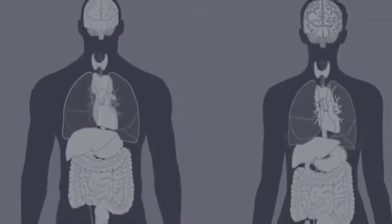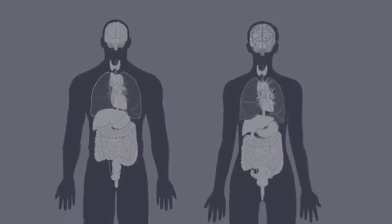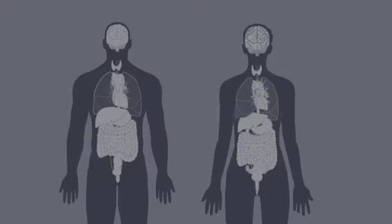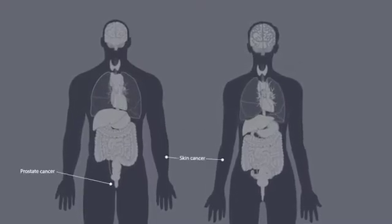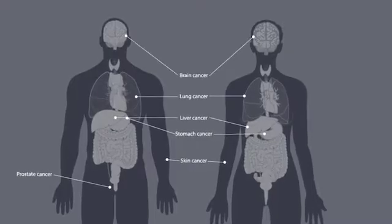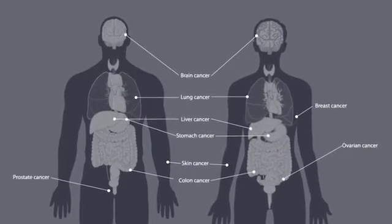Cancer refers to a group of diseases where cells grow uncontrollably and spread abnormal cells through the body. There are more than 100 different types of cancer. Most cancers are named for the organ or type of cell in which they start.